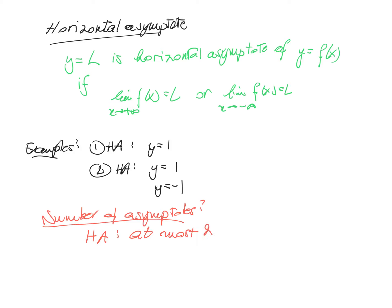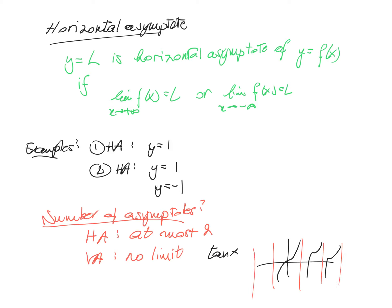One that explains what happens at minus infinity, one that explains what happens at plus infinity. So you have either two horizontal asymptotes if they are different, one horizontal asymptote if they are the same as in our first example, or zero if there is not a single one. For vertical asymptotes, there is no such limit. Just think of the tangent function — if you plot it, you have a lot of curves and in between each of these curves is a vertical asymptote, so you have infinitely many. But there can never be more than two horizontal asymptotes.